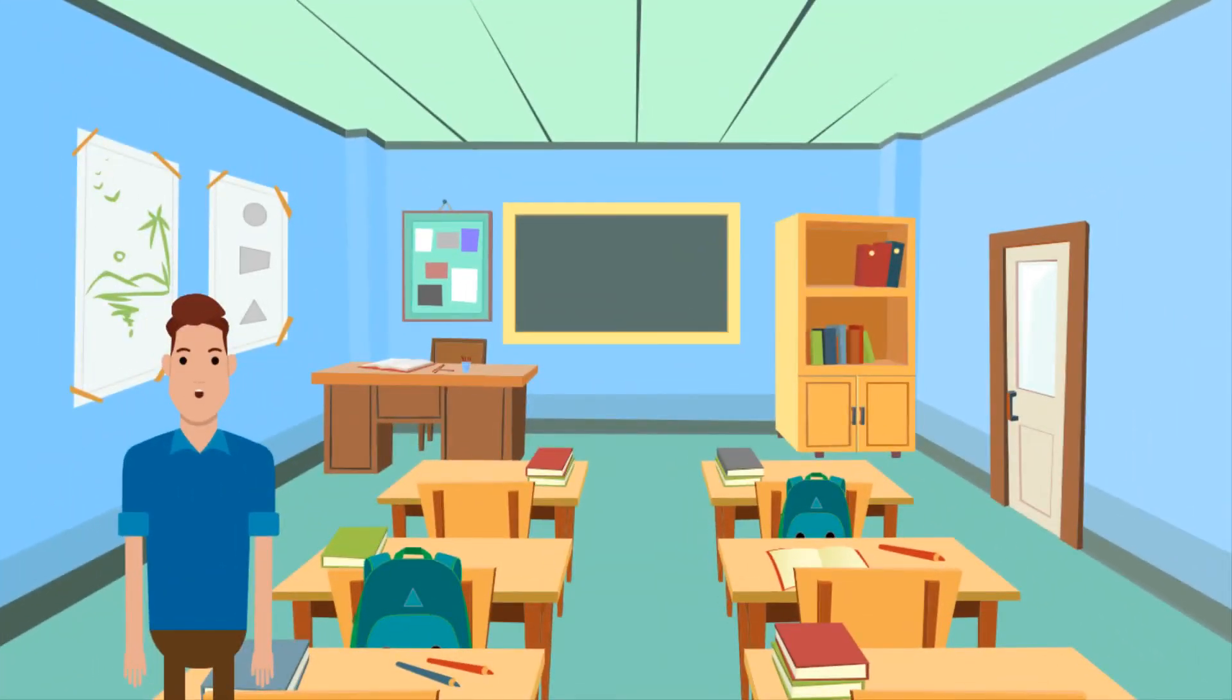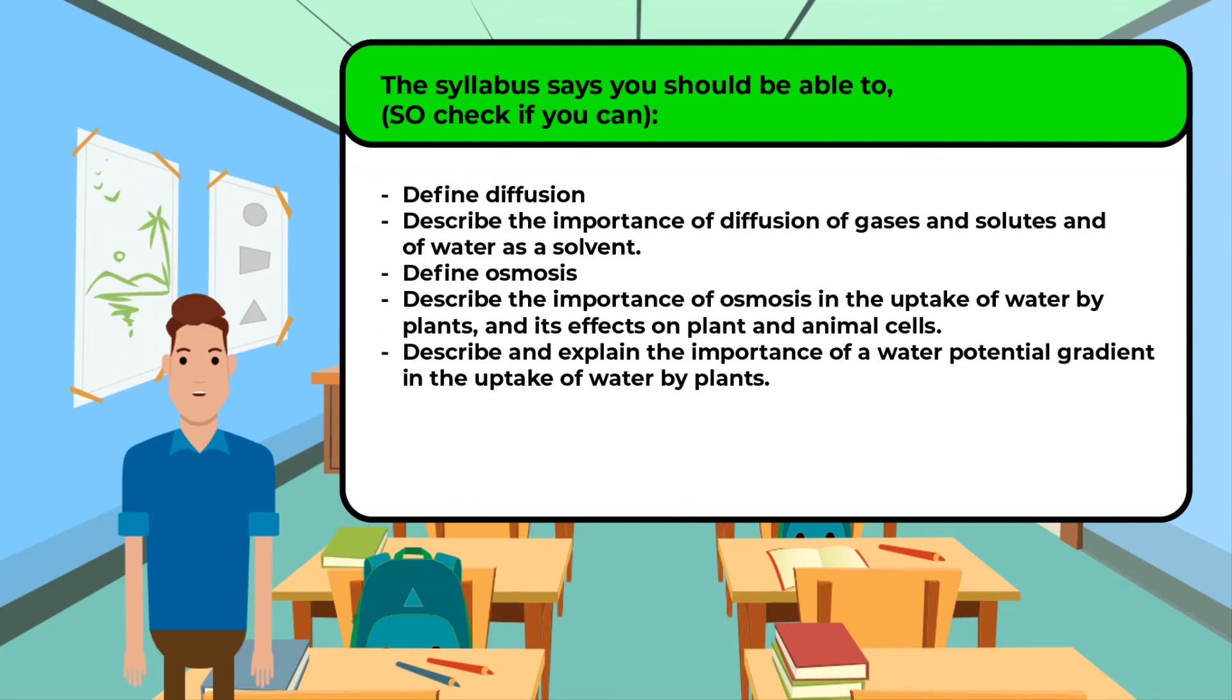The syllabus says you should be able to do the following, so check if you can. Define diffusion. Describe the importance of diffusion of gases and solutes and of water as a solvent. Define osmosis. Describe the importance of osmosis in the uptake of water by plants, and its effects on plant and animal cells. Describe and explain the importance of a water potential gradient in the uptake of water by plants.